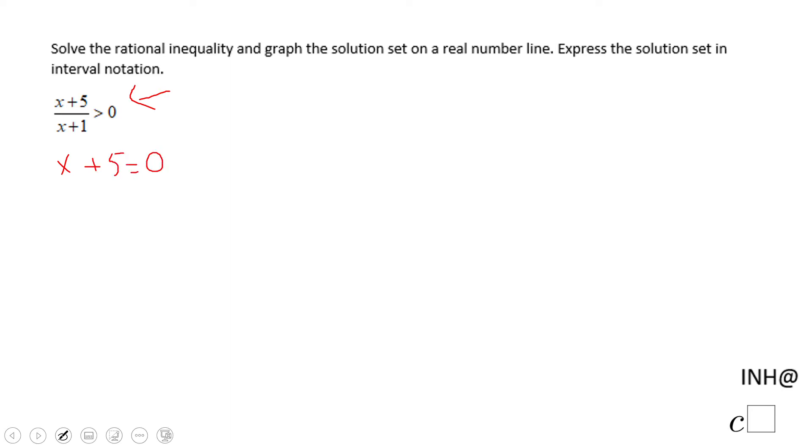In this case, that will give us x equals negative 5. And the denominator x plus 1, make that one equals to 0 also, and that will give us x equals negative 1.